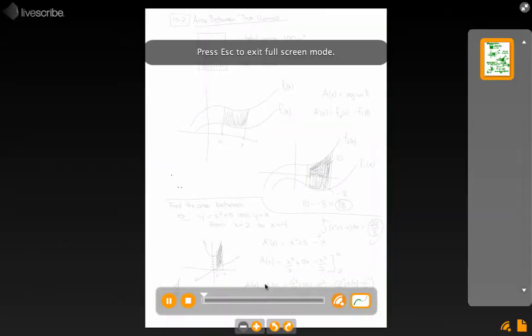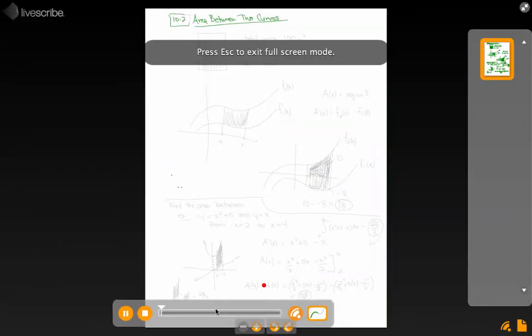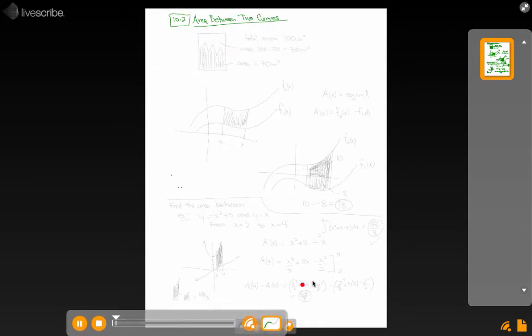This comes at section 10.2, the area between two curves. So first of all, just a quick logic exercise that doesn't have much to do with calculus. If I gave you a big rectangle like this and said that the total area of it was 100 square meters.